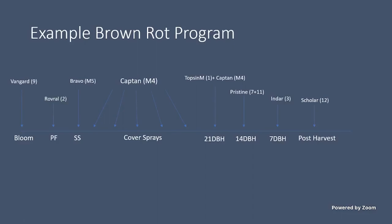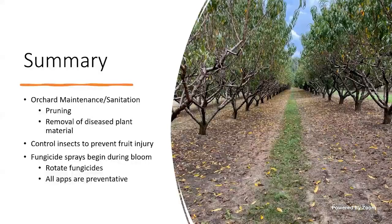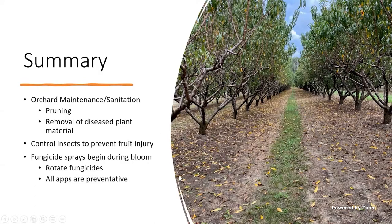In summary: orchard maintenance and pruning — keeping your orchard clean — is going to help you when it gets close to harvest season. Controlling insects and preventing entry points is also critical, as stink bugs and other pests break the skin and make fruit more susceptible to brown rot injury. Remember that all of these fungicides are preventative, not curative, so be sure to rotate them. Hopefully everyone has a good season — if you have any questions, there's my contact information.